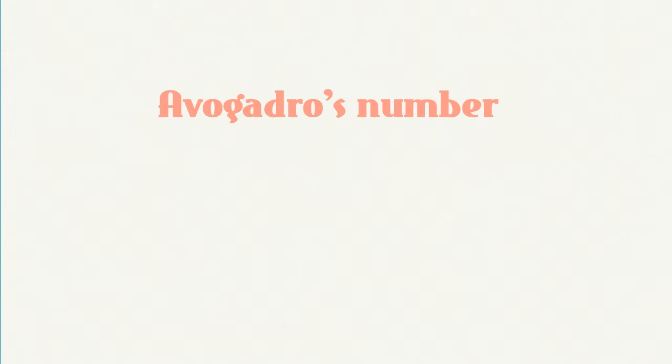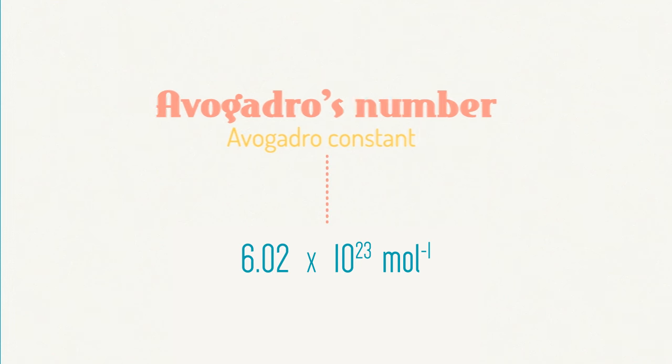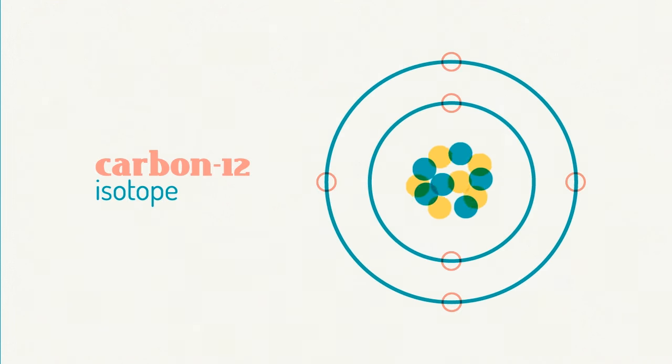Avogadro's number, Na, or the Avogadro constant, is 6.02 times 10 to the 23 particles per mole. It is the number of atoms per mole of the carbon-12 isotope.